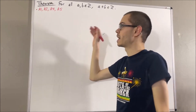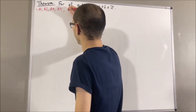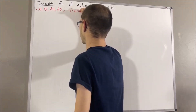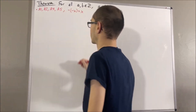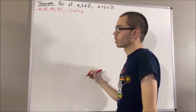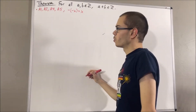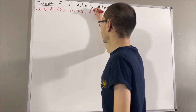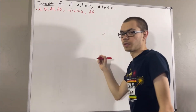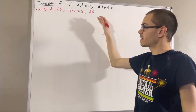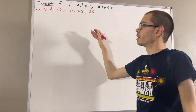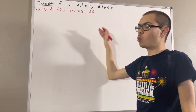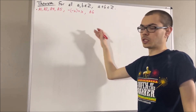A property about negatives that we've proven is that for all real numbers x, the negative of negative x is equal to x. We also have axiom 6, which tells us about the real number 1. It says that 1 is distinct from 0, and has the property that for all real numbers x, 1 times x is equal to x.